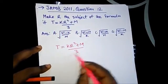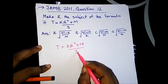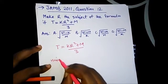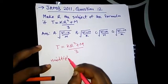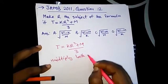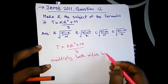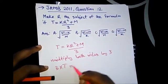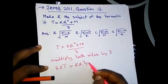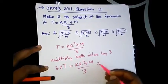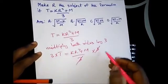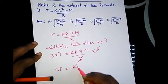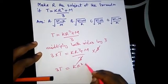First, let's cancel out the 3 from the denominator by multiplying both sides by 3. So we have 3 × t = (kr² + m) / 3 × 3. The 3s cancel, leaving us with 3t = kr² + m.